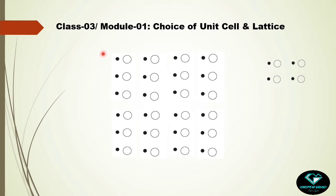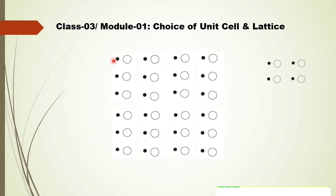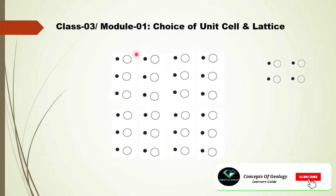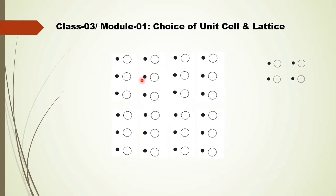Next, what is the lattice — the plan for this arrangement? There are two types of vectors: a horizontal vector and a vertical vector. The horizontal vector is clearly longer than the vertical one, so this two-dimensional object is actually a rectangle. This rectangular grid pattern is the basic plan of arrangement of the motif, so the lattice here is a rectangular grid pattern.